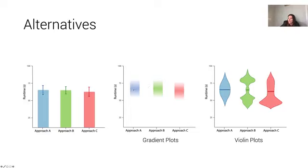So gradient plots have their transparency fading out from the center as a function of the distribution of the data. So we can see that values that are further away from the mean are less likely.